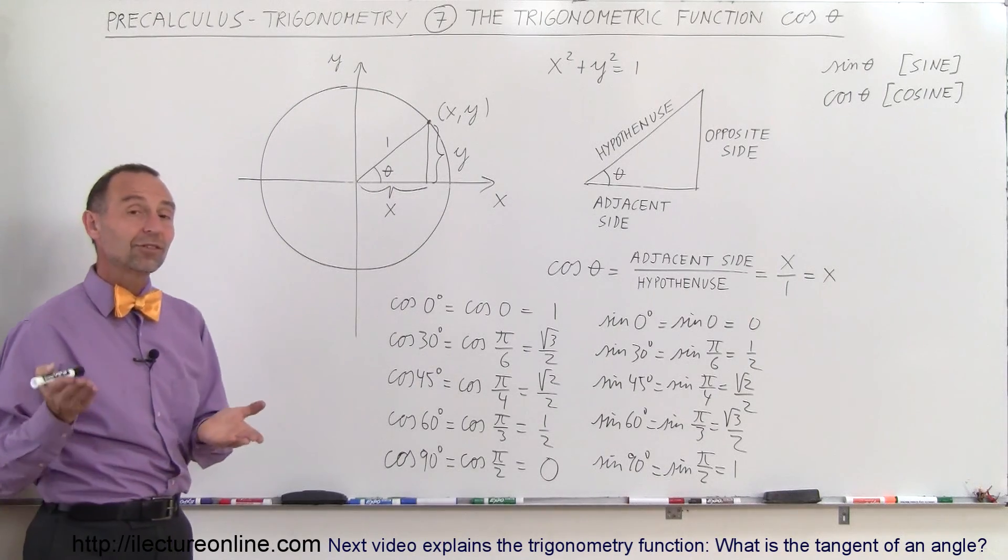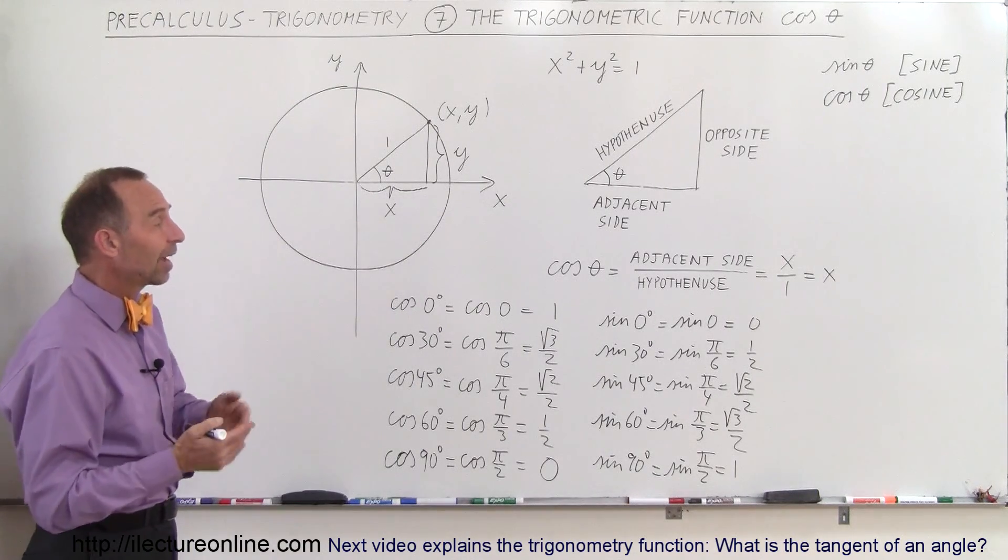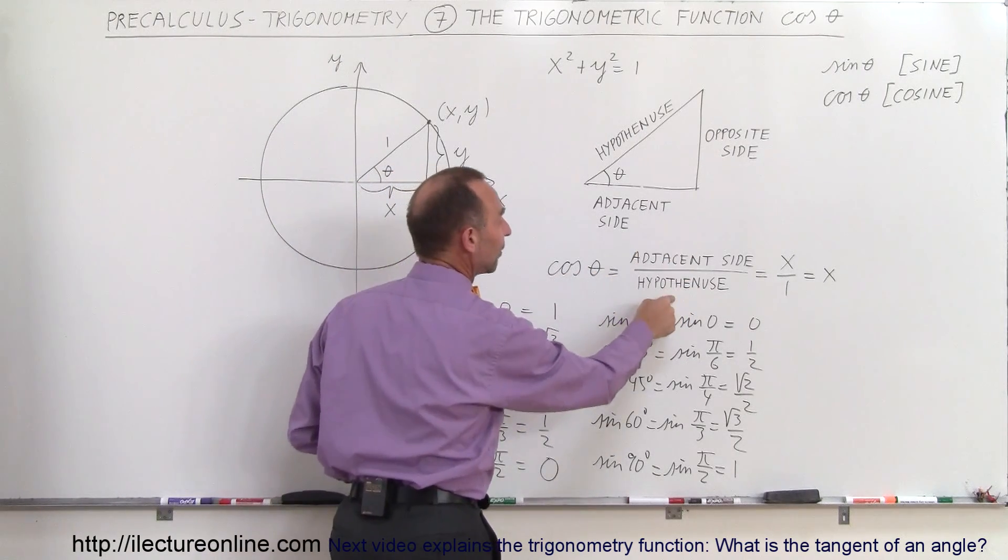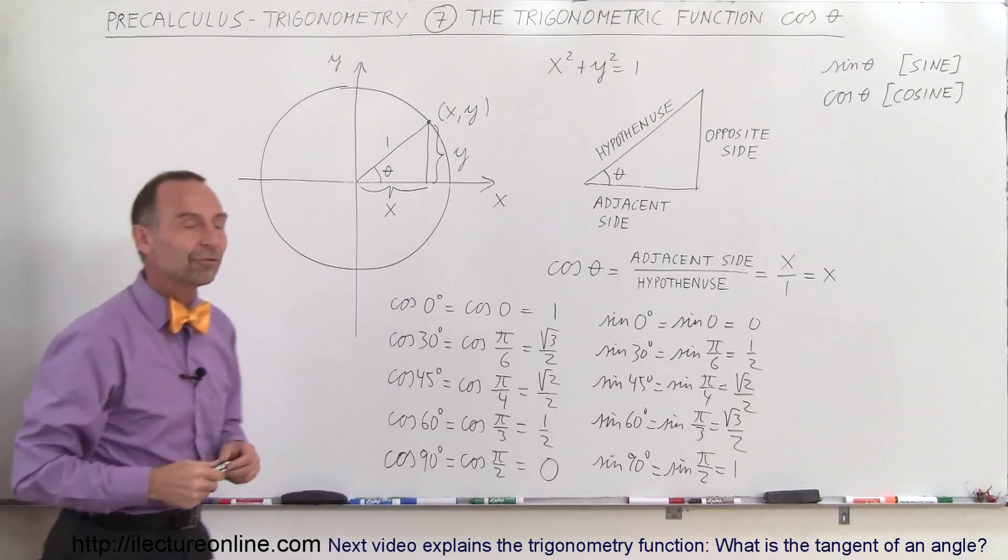And again, the definition of the sine and the cosine is simply: for the sine it was the opposite side divided by the hypotenuse, and that's how we define those functions.